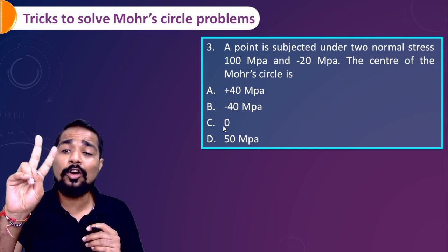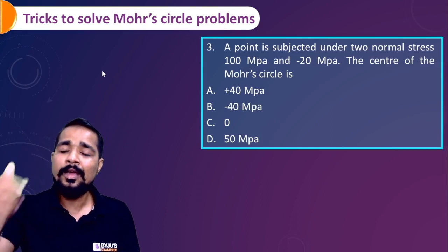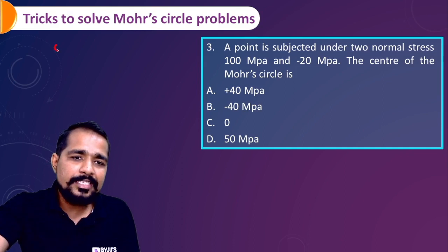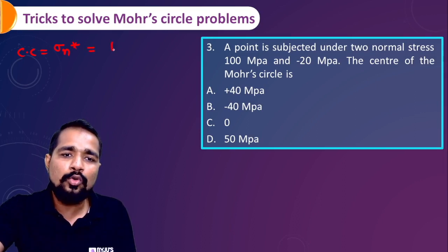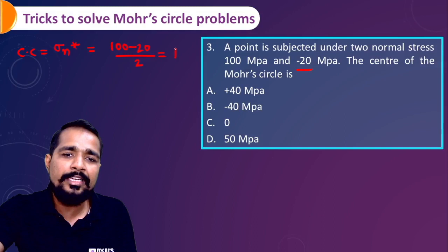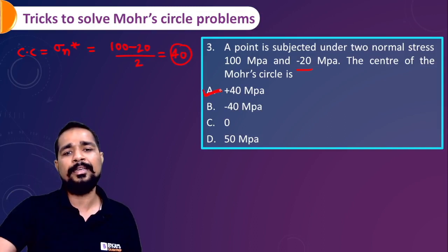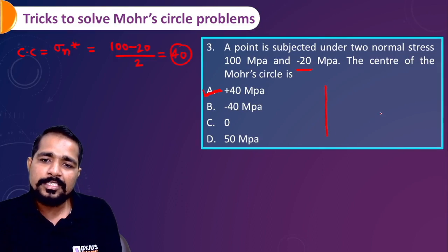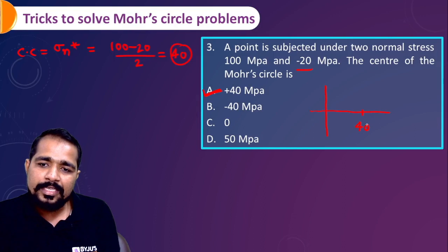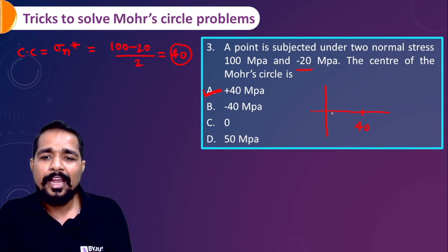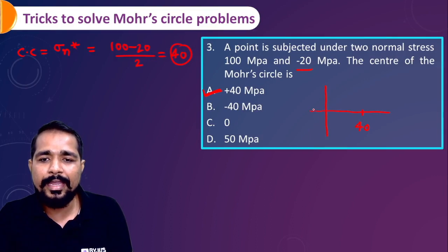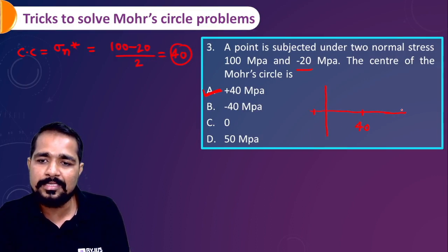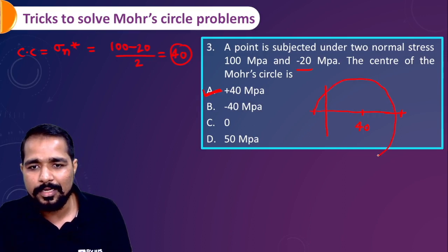Problem 3: A point is subjected to two normal stresses only, σ_x = 100 MPa and σ_y = −20 MPa. The center of the Mohr's Circle = (100 + (−20))/2 = 80/2 = +40 MPa, so center is at (40, 0). You then calculate the radius and draw the circle centered at 40 with that radius.